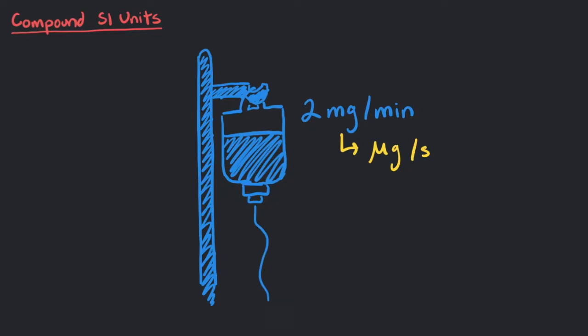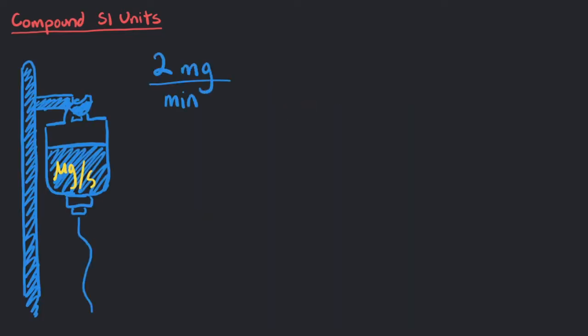First, let's write down our known number of 2 mg per minute. For now, we will focus on converting the milligrams to micrograms. To do this, we need to go from milligrams to the base unit of grams and then micrograms. To go from milligrams to grams, what conversion factor should we use?